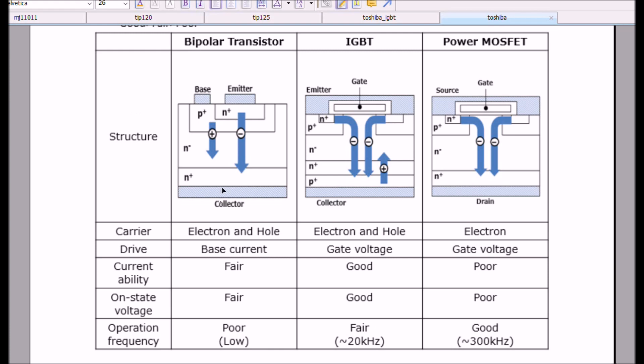Bipolar transistor. This represents an NPN transistor. A current between the base and emitter will produce a correspondingly greater current from emitter to collector. In this case that is called HFE or DC current gain. Bipolar transistors use both electron and hole flow. It is a current operated device. Current capability is fair. On state voltage is fair. But operation frequency tends to be low.